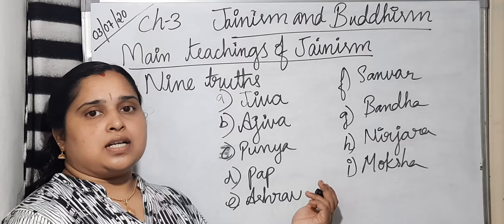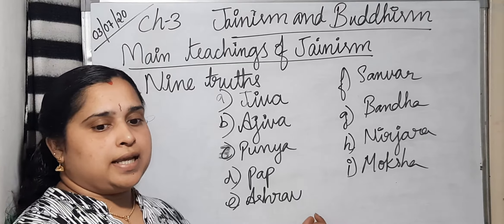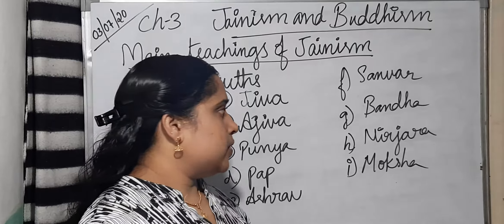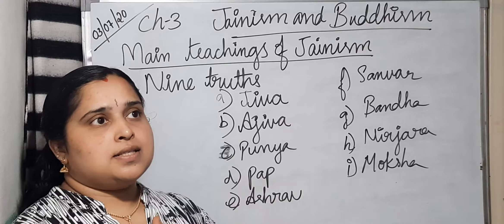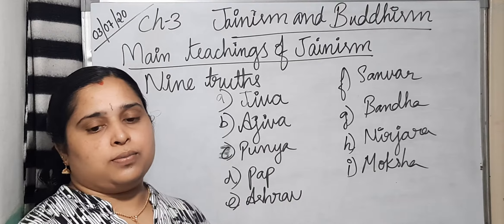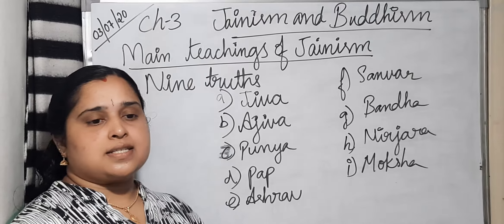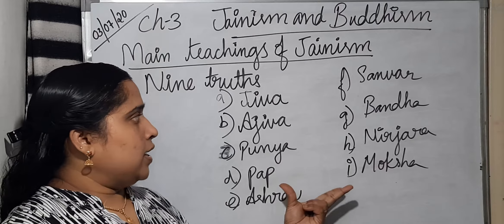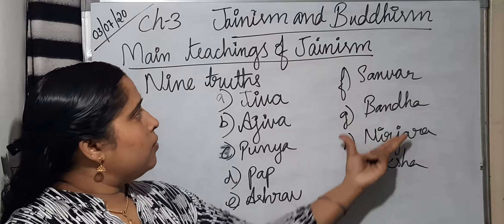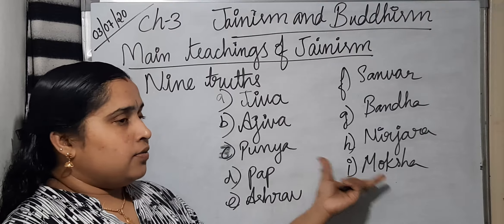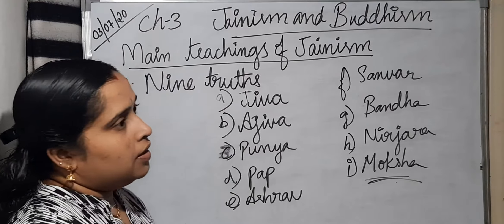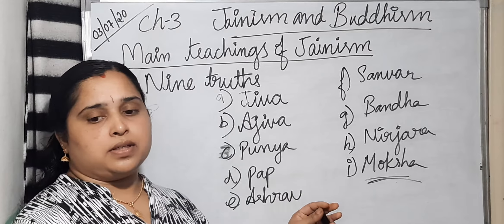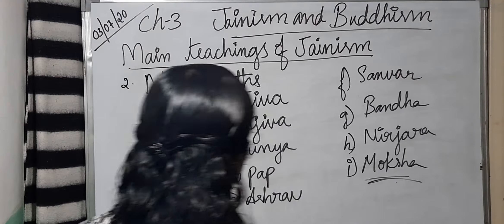Ashrao is also associated with good deeds. Sanvar is endurance in the way of karma. Bandha is the relation between our body and soul. Nirjara is the destruction of karmas. And finally, Moksha — according to Jainism, if we overcome all these nine truths, then we can attain Moksha, which means stopping the cycle of death and rebirth.